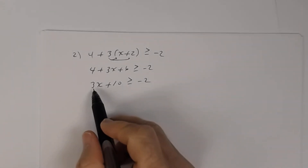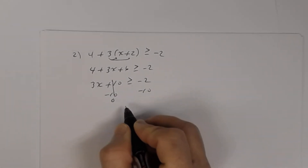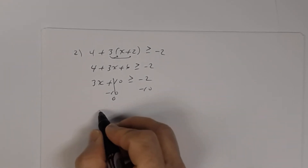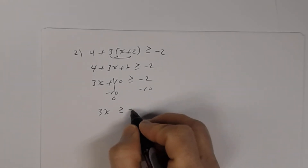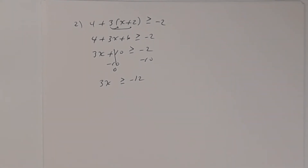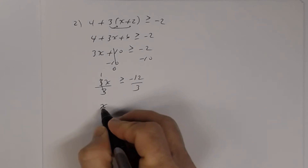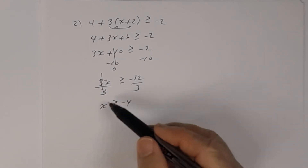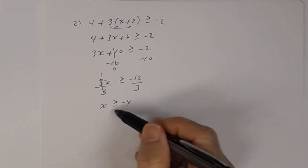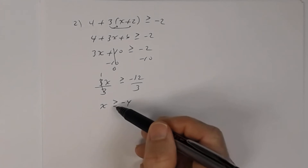Get x by itself: subtract 10 from both sides. 10 and negative 10 is zero, and negative 2 minus 10 is negative 12. So 3x is greater than or equal to negative 12. Dividing both sides by 3: x is greater than or equal to negative 4. Any real number greater than or equal to negative 4 is a solution — and this time we have an equal sign included.